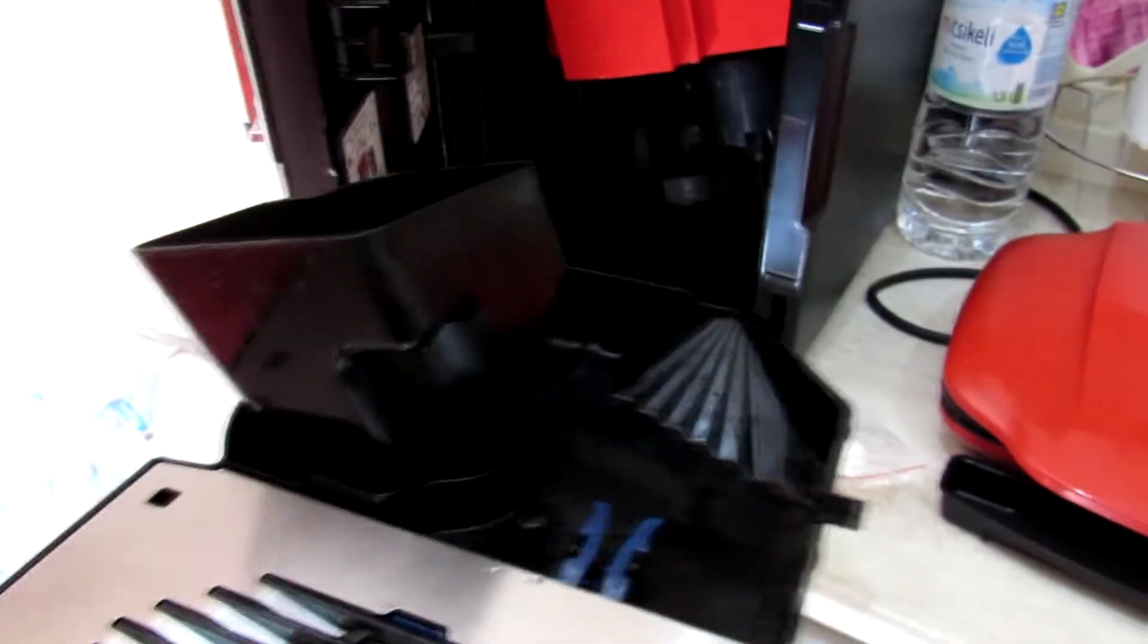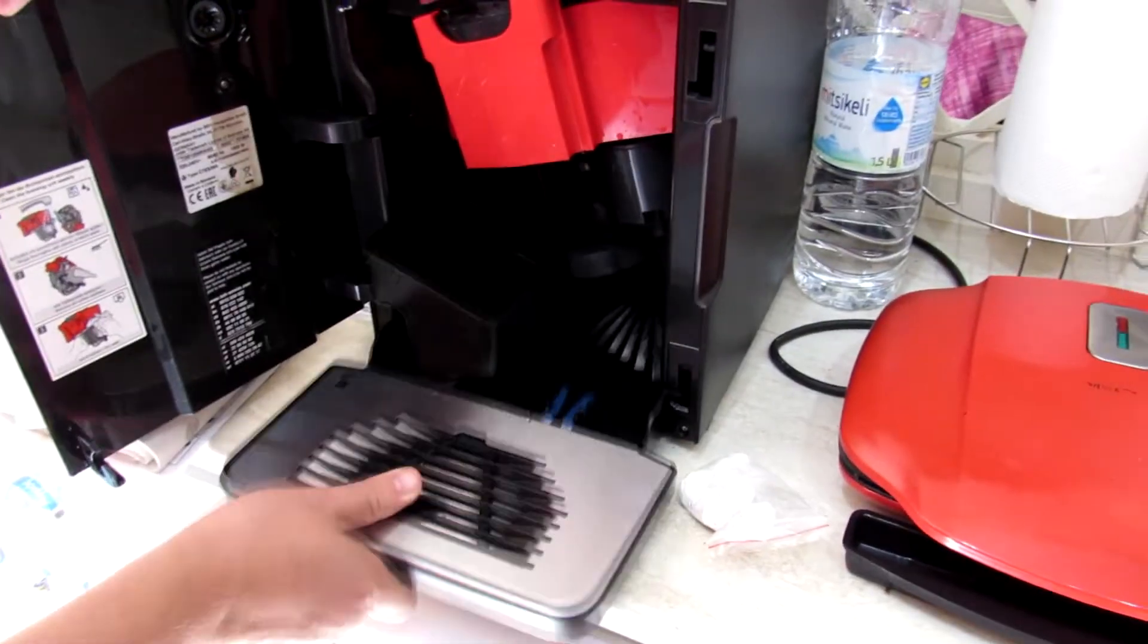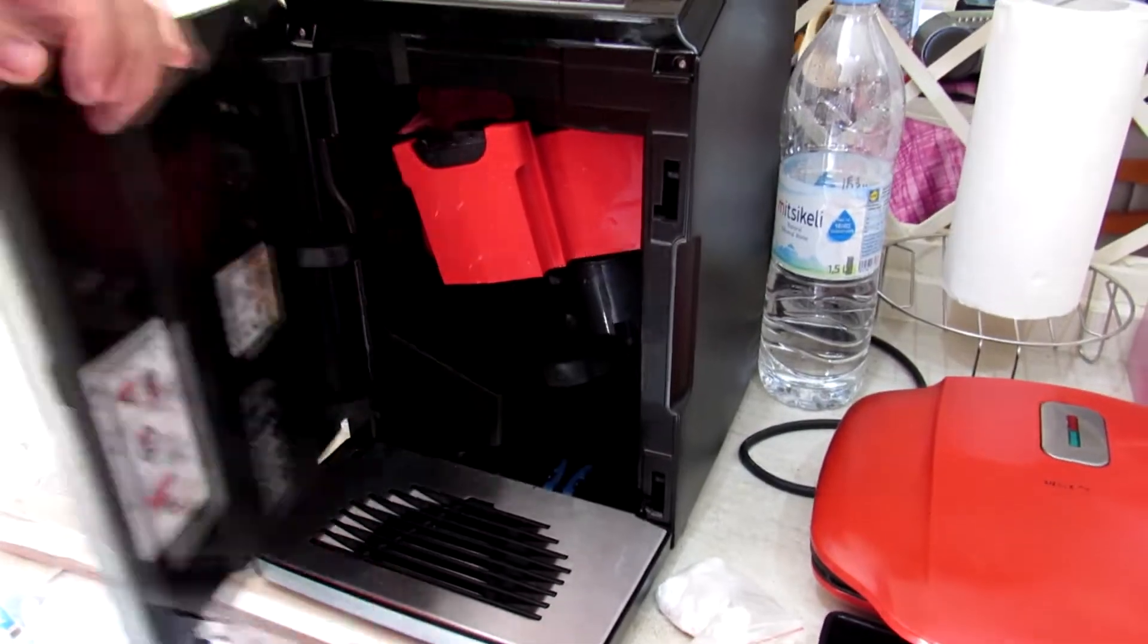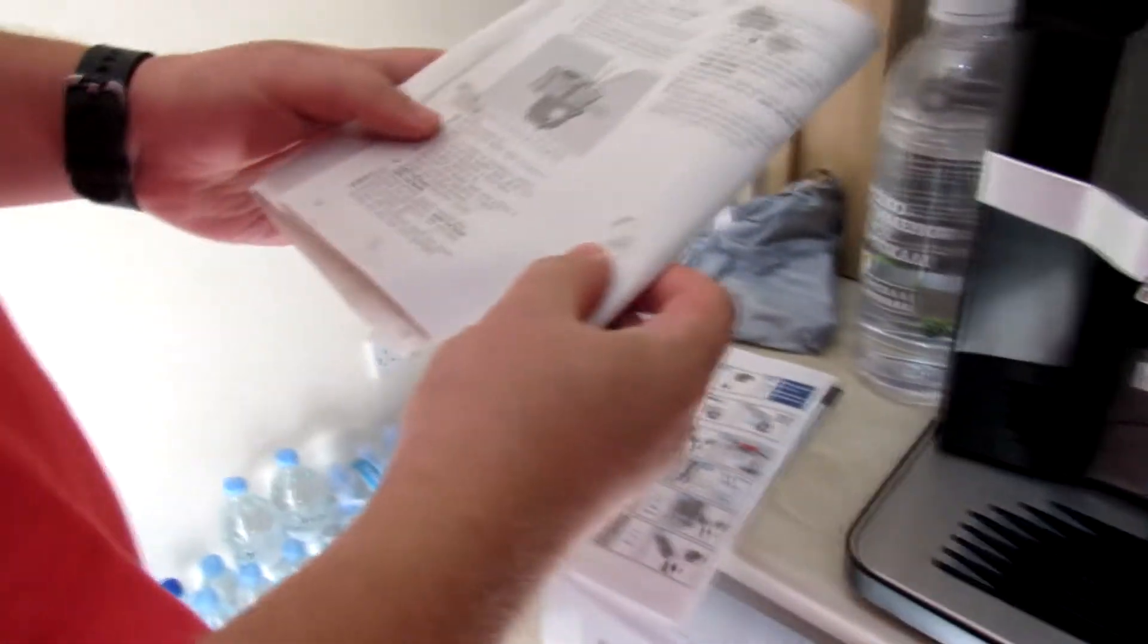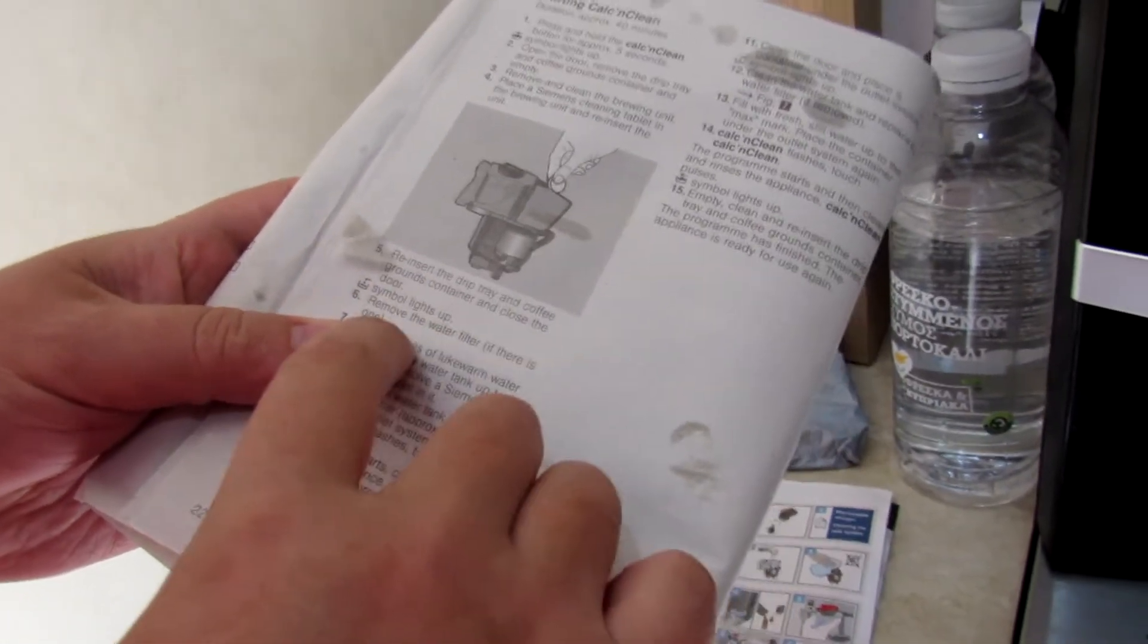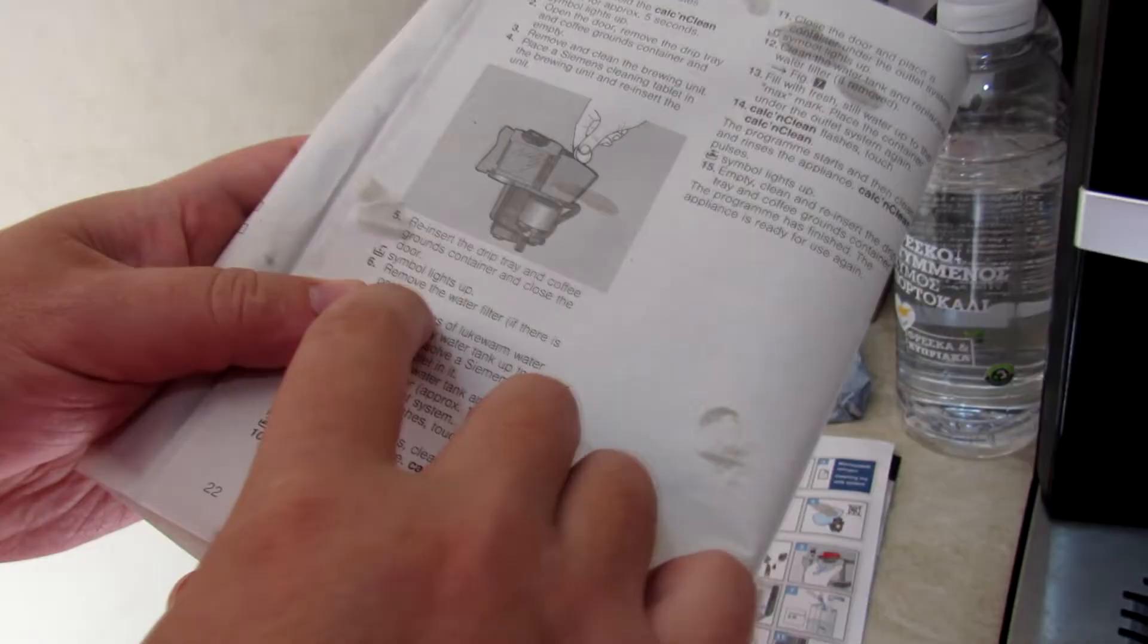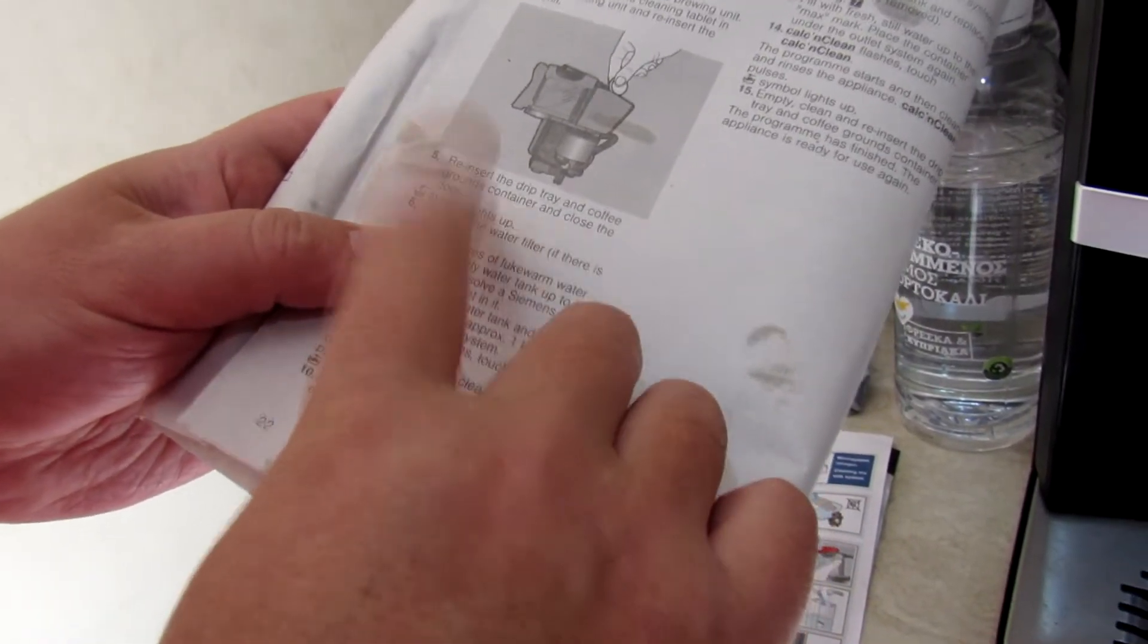We reinsert the drip tray and coffee ground container and close the door. The door is closed. Stage 6: Remove the water filter if there is one. We have good quality water after a filter, and we do not have any water filter.